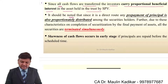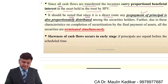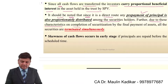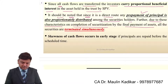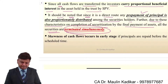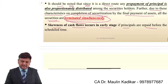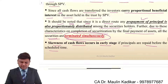It should be noted that since it is a direct route, any prepayment of the principal is also proportionately distributed among the security holders. Further, due to these characteristics, on completion of the securitization by the final payment of the assets, all securities are terminated simultaneously. Skewness of the cash flows occurs in the early stage if the principals are repaid before the scheduled return.